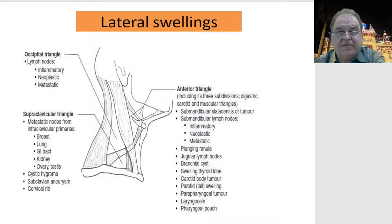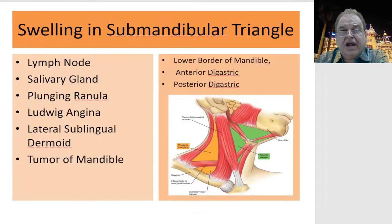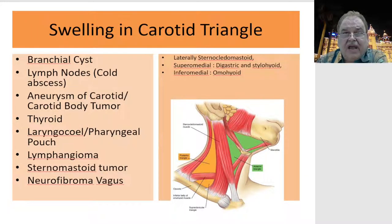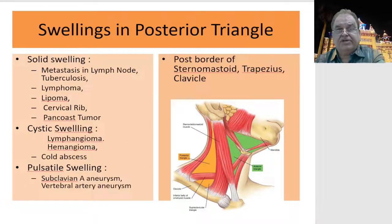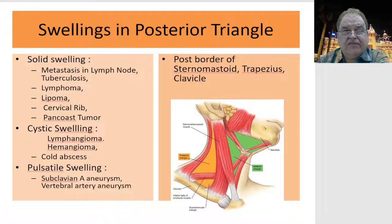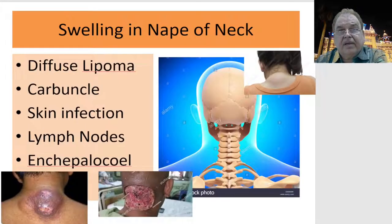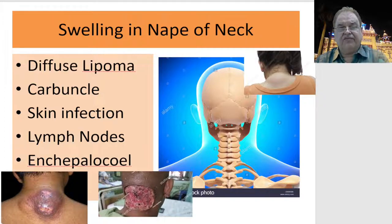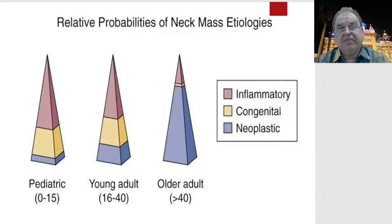Lateral swellings depend upon their location. In the submental triangle there can be lymph nodes, salivary glands, Ludwig's angina, dermoids, and tumors of the mandible. In the carotid triangle: branchial cysts, lymph nodes, carotid body tumor, laryngocele, and laryngeal seal. In the posterior triangle, swellings are divided into solid, cystic, or pulsatile. Solid swellings are most commonly metastasis in lymph nodes, but also lymphoma, lipoma, cervical rib, or Pancoast tumor. At the nape of the neck: diffuse lipoma, carbuncle in diabetic patients, skin infections, occipital lymph nodes, and congenital encephalocele.